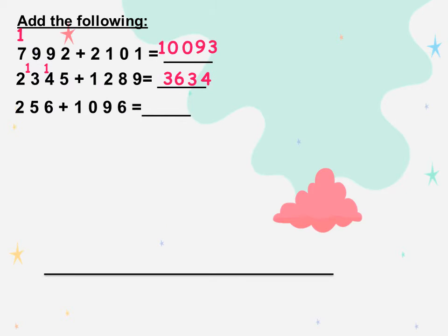The next: 256 plus 1,096. Ones with ones: 6 plus 6 equals 12, so we will write 2 and carry up 1. 1 plus 5 is 6. 6 plus 9 equals 15, so we will write 5 and carry up 1. 1 plus 2 is 3. 3 plus 0 equals 3. And the last digit we will write 1. So the result is 1,352.